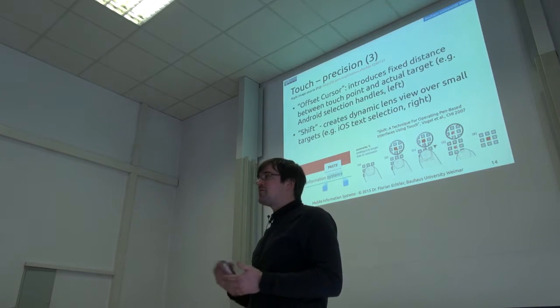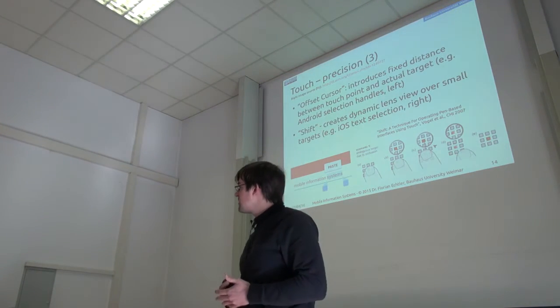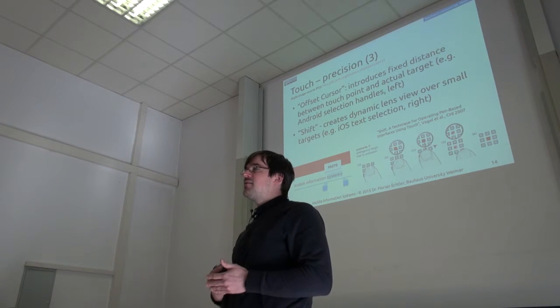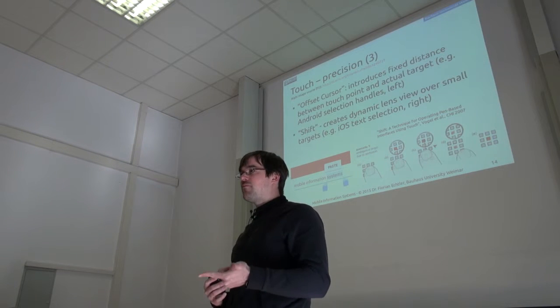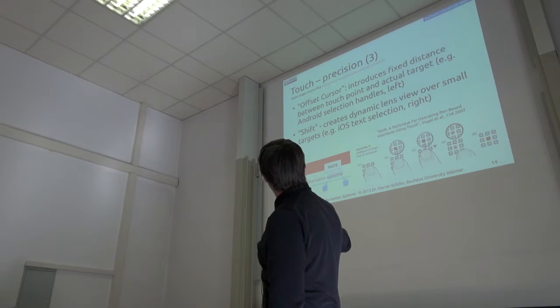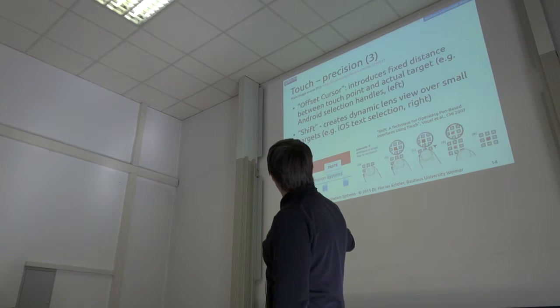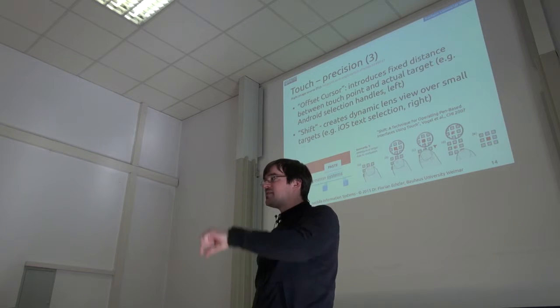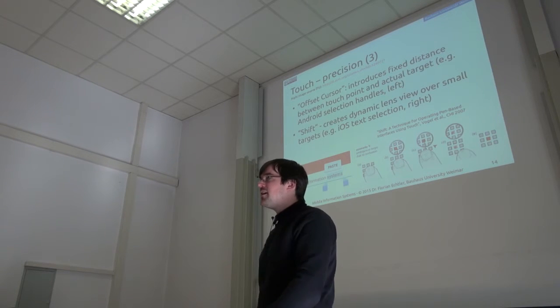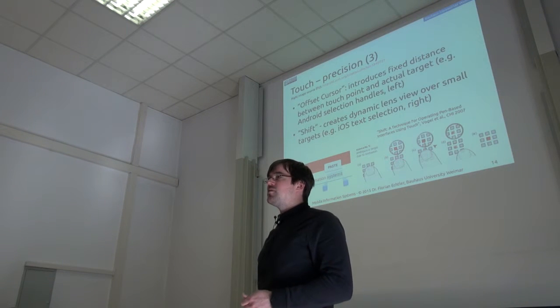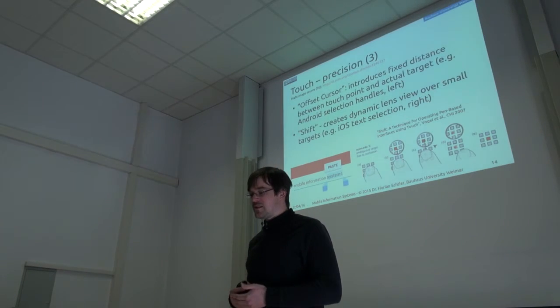So the solution that's currently being used is to just offset things from the touch point to deal both with occlusion and with precision. For example, if you touch on a piece of text in Android, then you will get these handles, which are a lot bigger than the actual pieces of text, so they're easier to move. You will get these offset menus, so you don't occlude them.